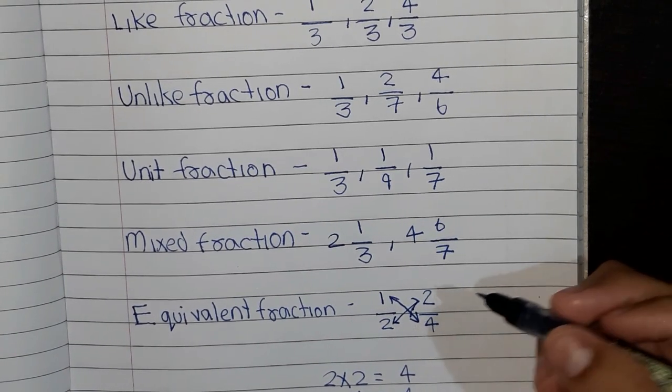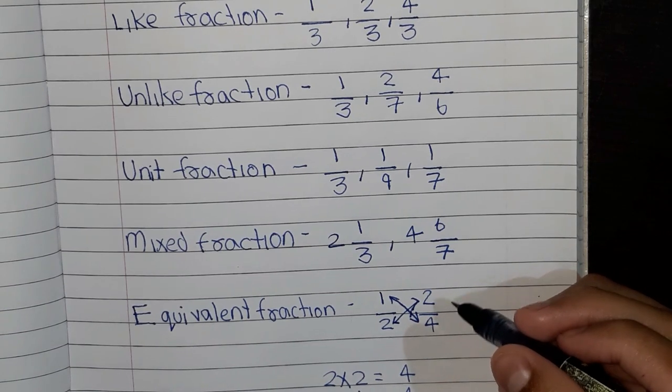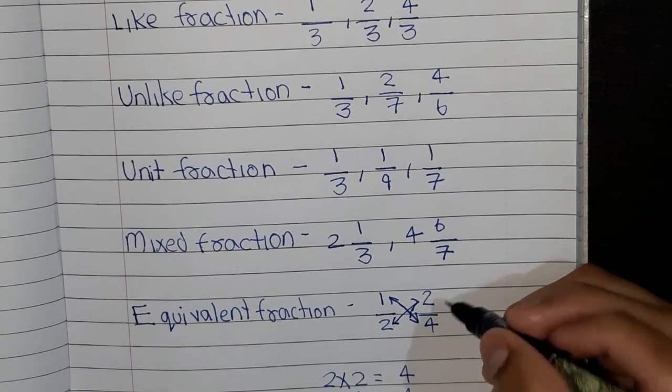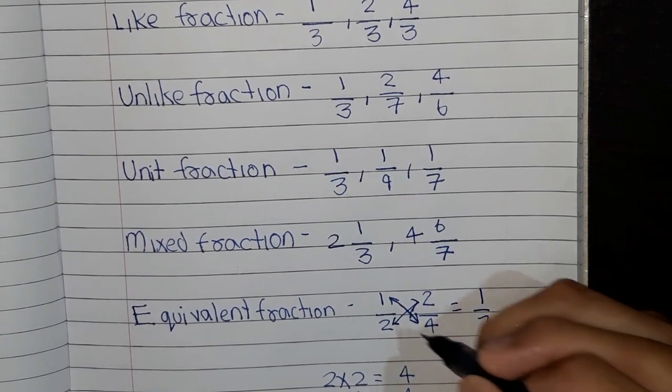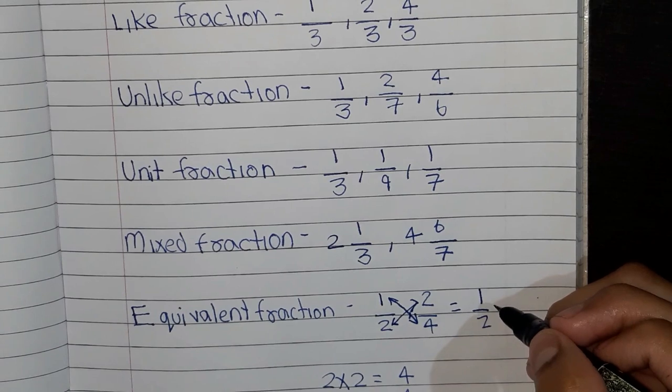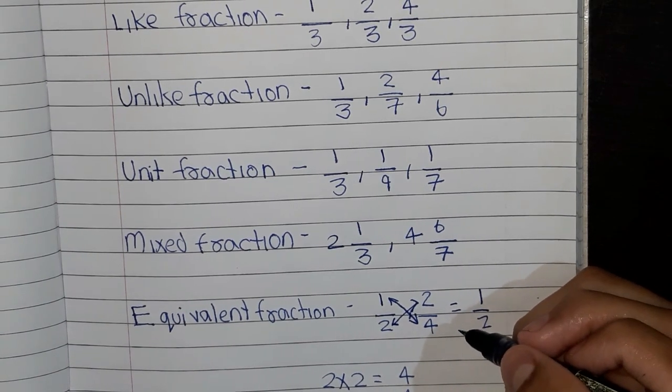The other way to know whether the fraction is equivalent or not is to divide 2 by 4 equals to 1 by 2. 1 by 2 and 1 by 2. So this shows us that this fraction is an equivalent fraction.